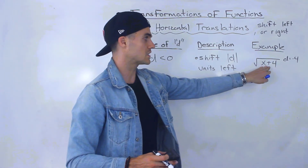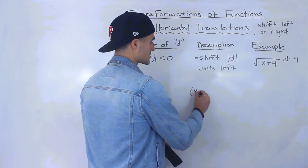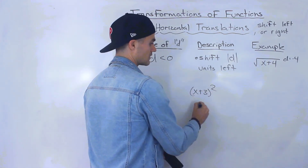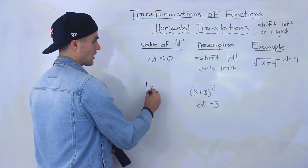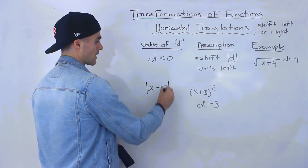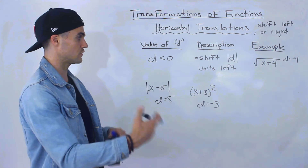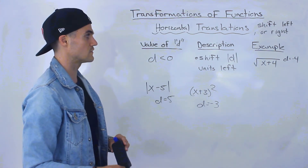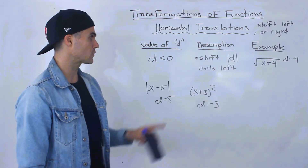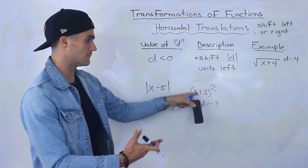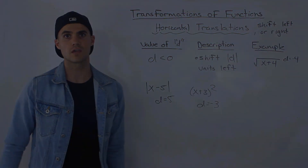Just remember that you're always flipping that sign. For example, if you have x plus 3 squared, the d value is negative 3. Or if you have the absolute value of x minus 5, the d value is positive 5 — you're always flipping the sign of that d value. It's why the d value is a little tricky: you're flipping the sign, while the k value, when you're describing it, you're taking the reciprocal.